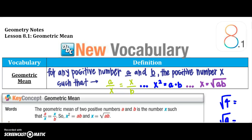We are going to start into lesson 8.1, which talks about geometric mean. Chapter 8 has a lot to do with the Pythagorean theorem, so a squared plus b squared equals c squared. And then we will also use sine, cosine, and tangent, which are our trig functions.